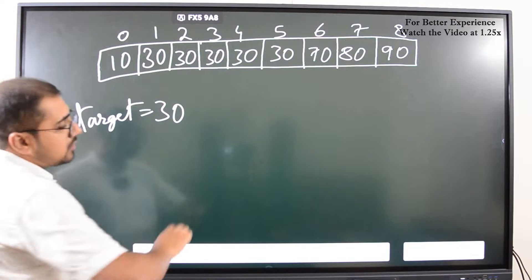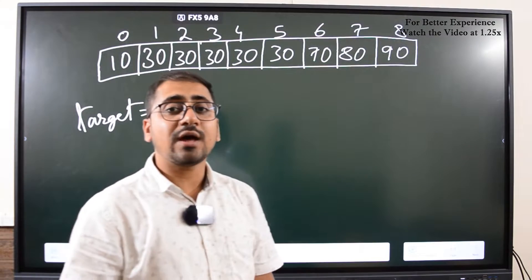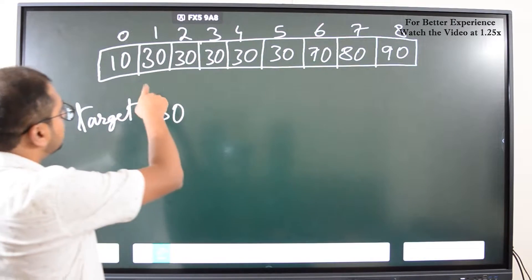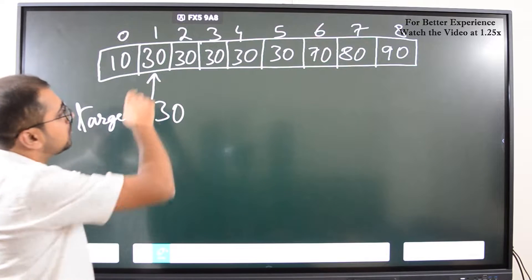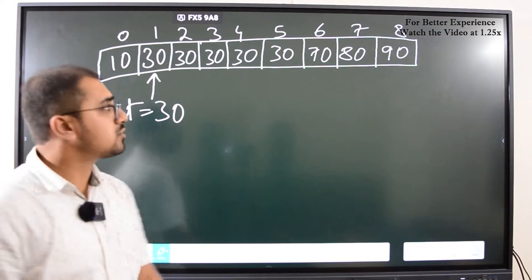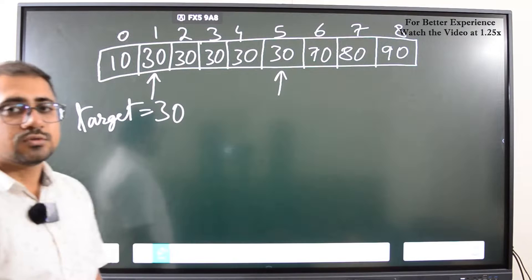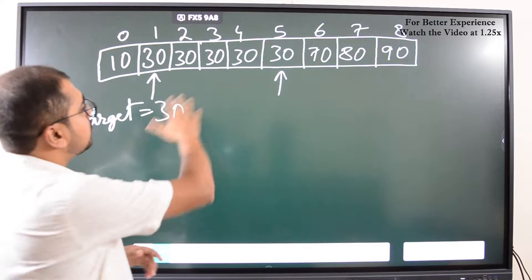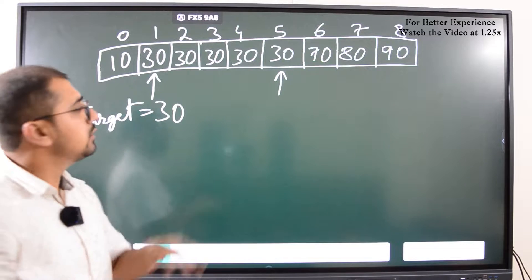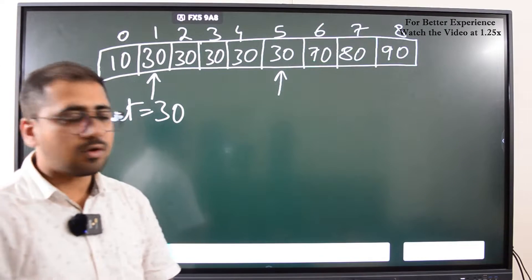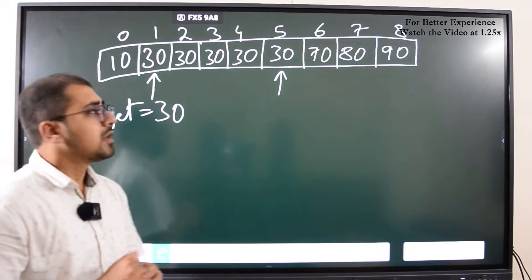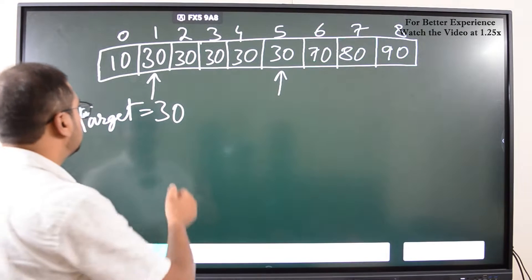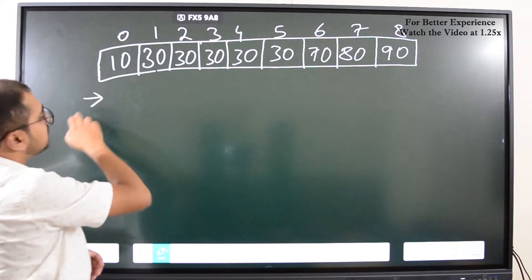Suppose the target element is 30. I want to find the first occurrence of 30 — that's at index 1. The last occurrence of 30 is at index 5. The total number of occurrences of 30 is 5. Now, how are we going to do this? Normally, using linear search, I would start from the left side.